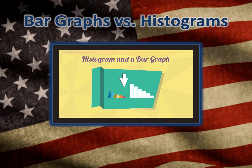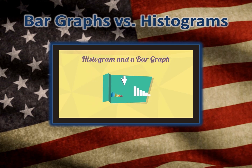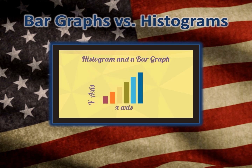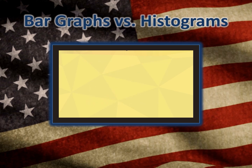A histogram and a bar graph are both ways to graph data. Both have an x and a y axis, and both use a bar to display the data.